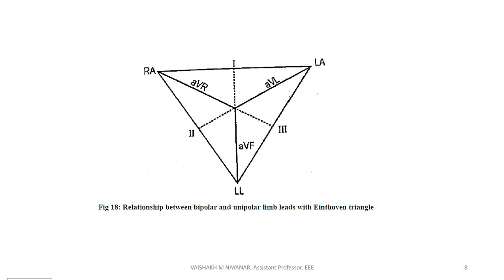Now, if we consider bipolar and unipolar leads, the connections are related to Einthoven's triangle. Lead Augmented Vector Right — in the AVR, the right arm is the positive non-inverting section. The right arm is positive while the left arm and left leg form the negative reference. In AVL, the left arm is positive and the left leg is negative. For AVF, the left leg is the positive terminal while the left arm and right arm are not directly connected to each other.